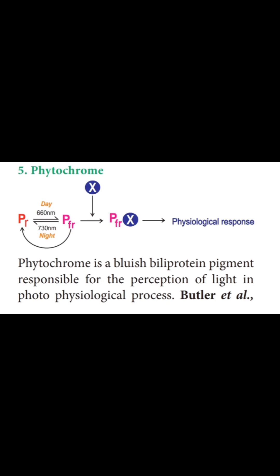The second form is PFR, the far-red light absorbing pigment, which absorbs light at 730nm. PR is the biologically inactive, stable form.